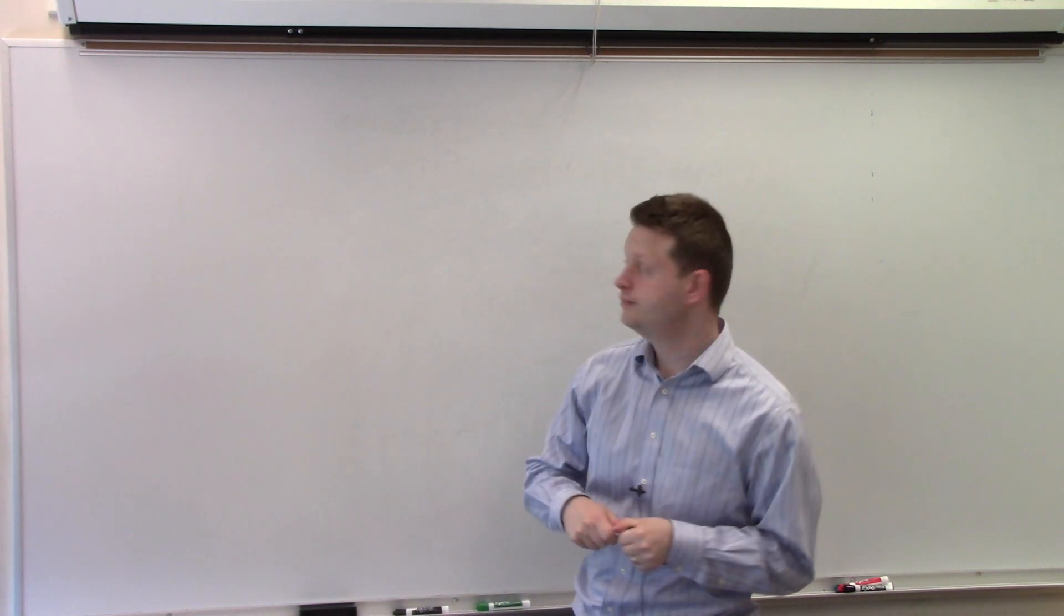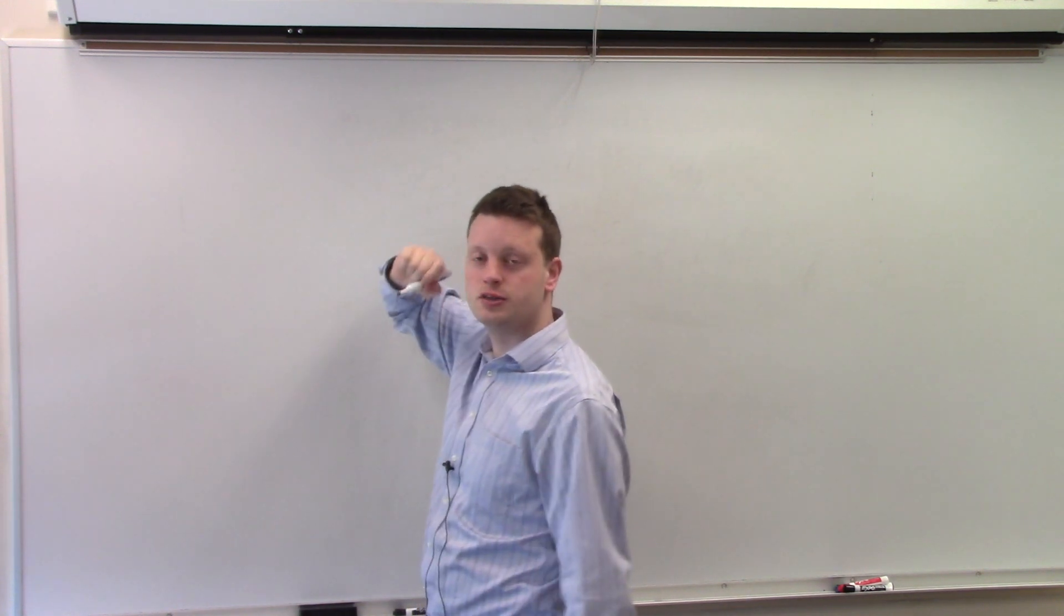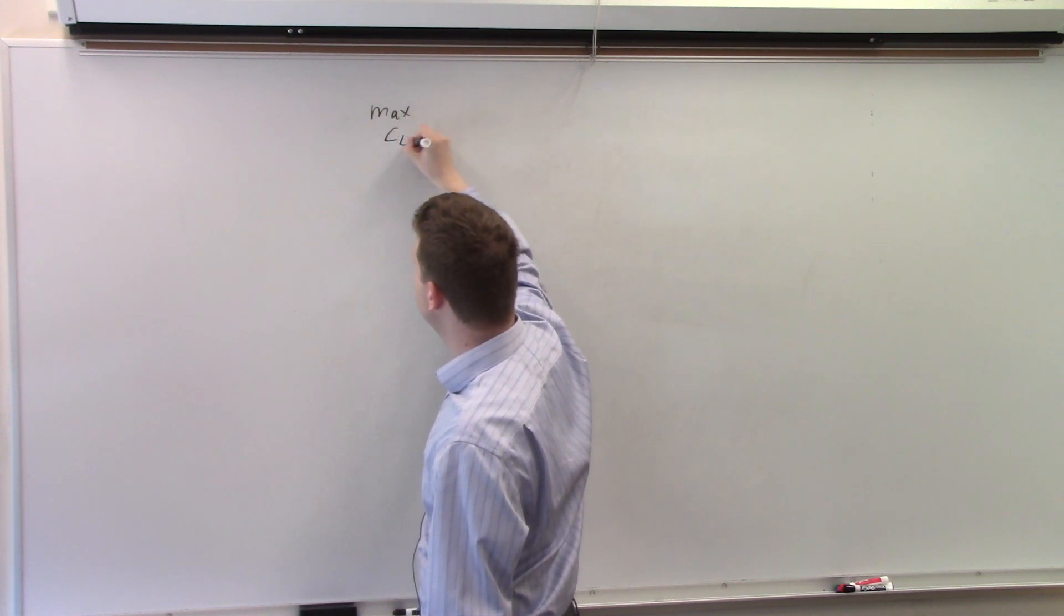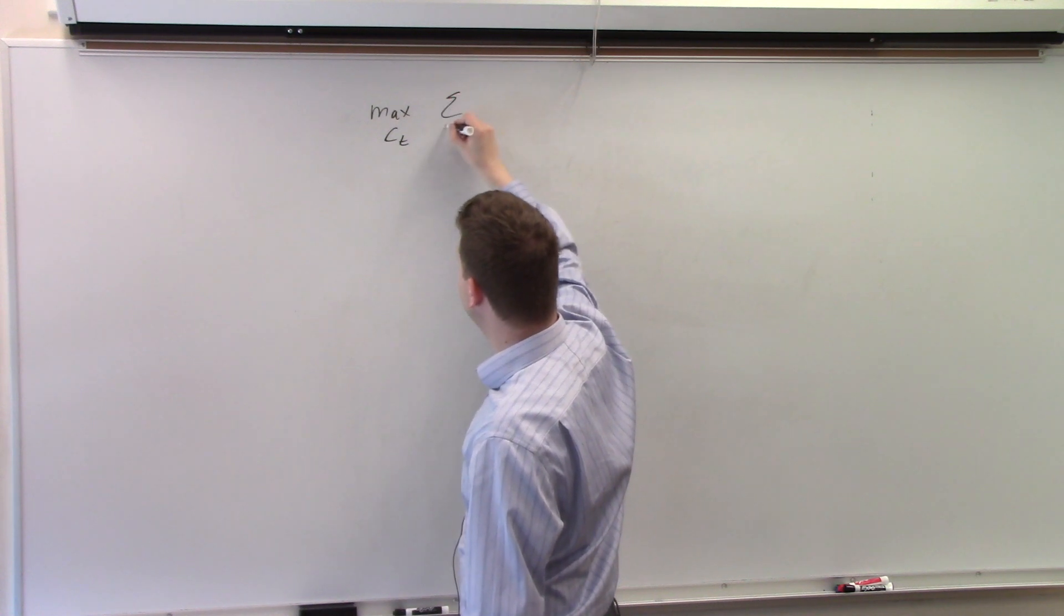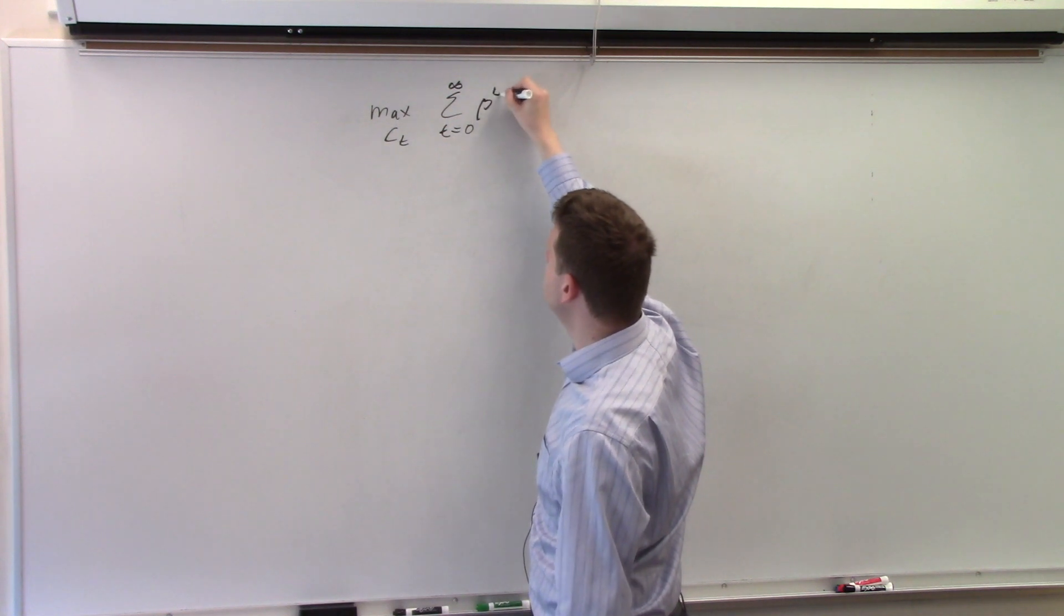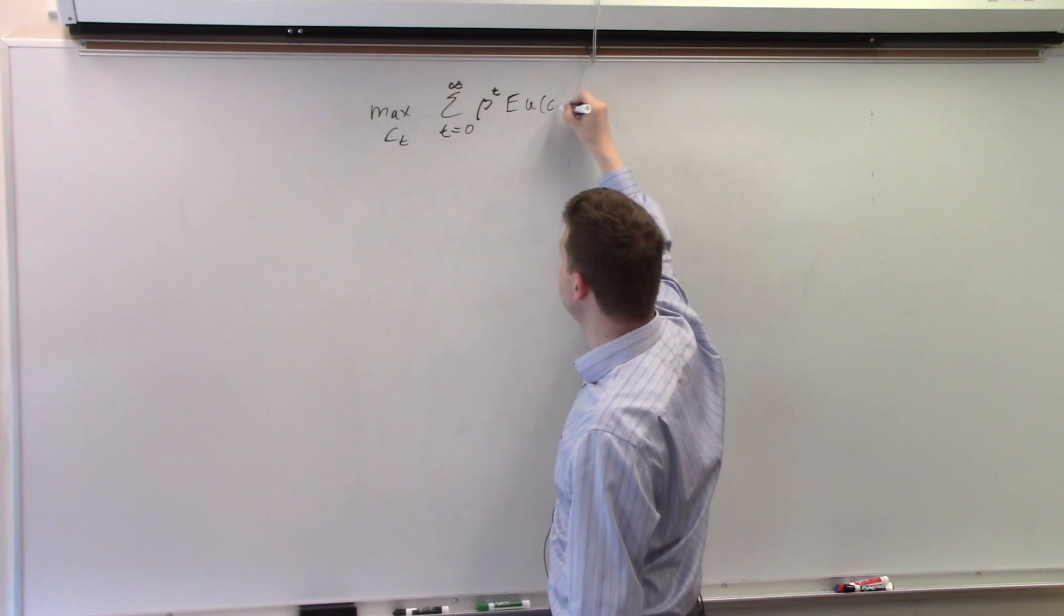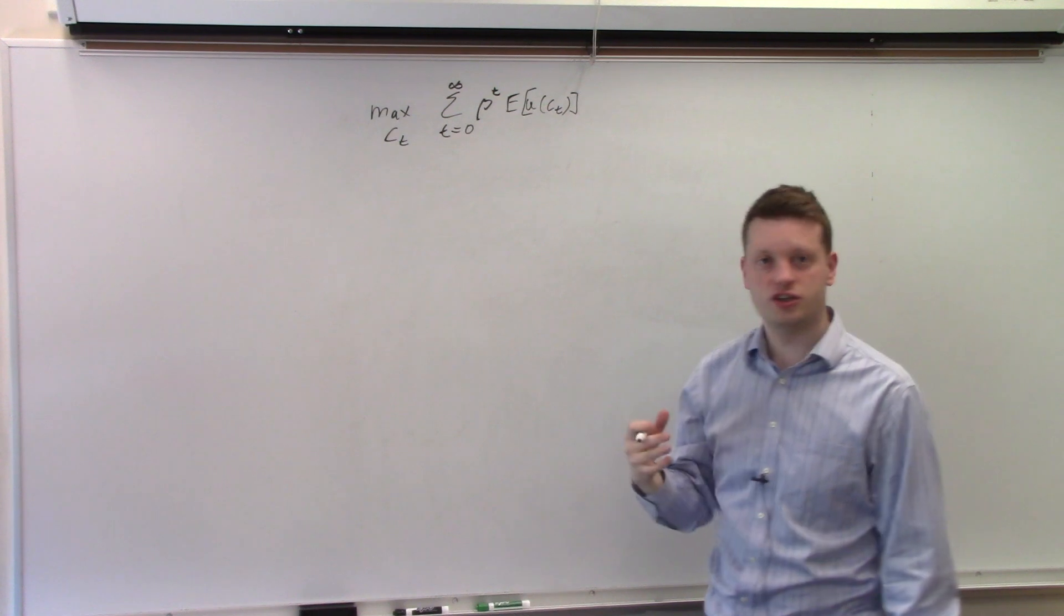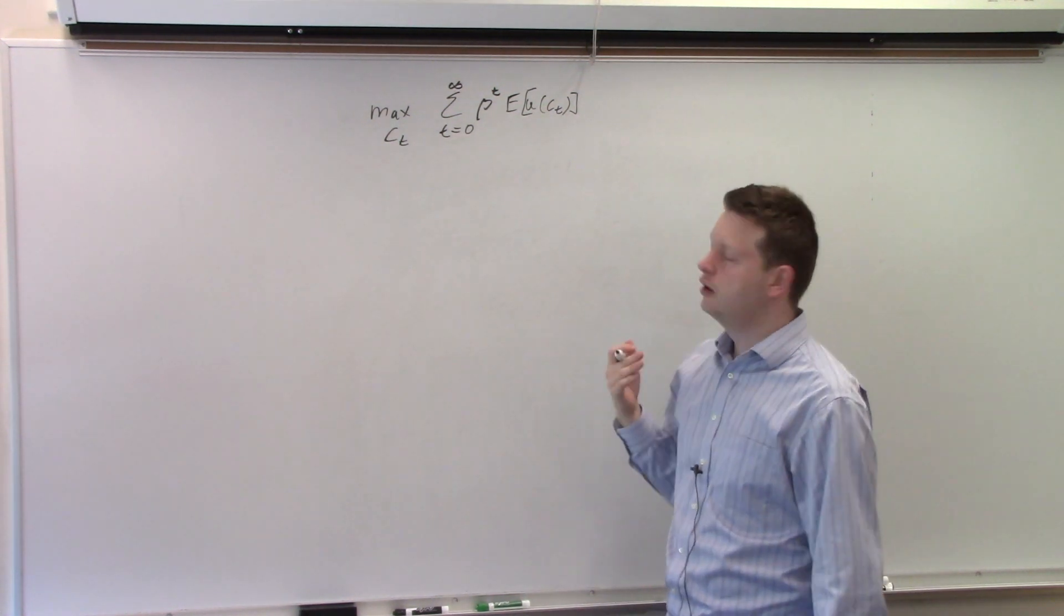Let's start with the following model. The consumer maximizes expected utility, so that is maximize consumption, and we have the sum from t equals zero to infinity times beta to the t times expectation of u of c_t. If it was not stochastic you just wouldn't have the E which signifies expectation here, but it would be the same model.